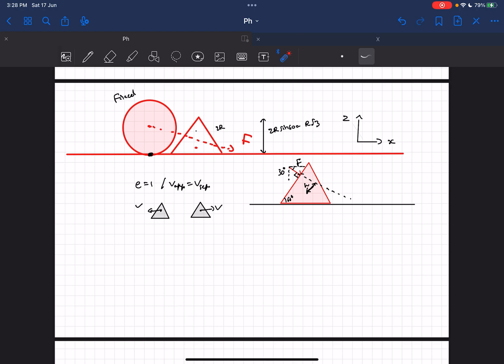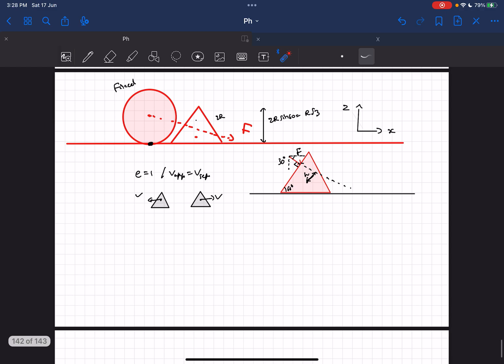It's given that the collision is elastic which means e would be 1 for this case, which means the approach velocity and the separation velocity between the two objects which are going to collide is the same. Now before collision, this wedge was approaching the sphere with a velocity v.